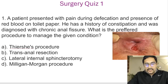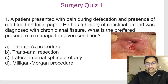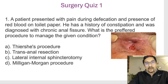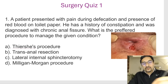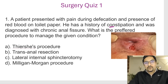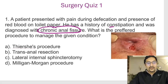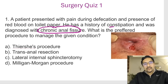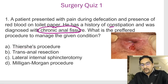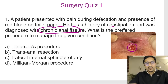The first quiz was on GIT. The first question: a patient with pain during defecation and red blood on toilet paper comes to the OPD. He also complains of constipation and was diagnosed with a chronic anal fissure. What is the preferred procedure to manage this condition? They've already mentioned the diagnosis — chronic anal fissure.